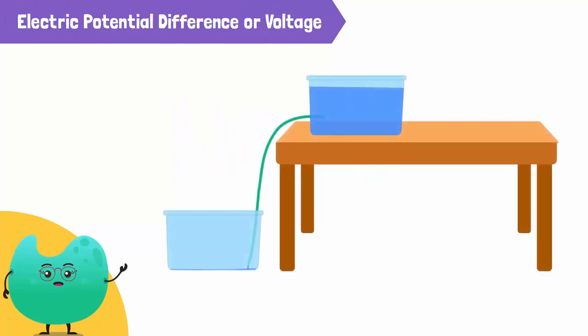The flow of electrons through a wire can be compared to the flow of water in a pipe. Consider two cans of water, one on the floor and the other on the table connected through a pipe. Which direction do you think the water will flow?